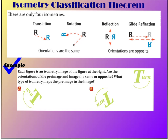Now we're looking at how to classify different transformations. There are four isometries: translation, which is just moving an object while keeping the orientation the same; rotation, which is spinning that object counterclockwise or clockwise. In those two transformations the orientation stays the same. But for reflections and glide reflections, the orientations are opposite. You can see a normal R versus a backwards R — in reflection and glide reflection the R is reversed. So we're going to look at some examples and figure out what type of transformation occurred based on whether the orientations are the same or opposite.